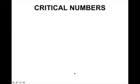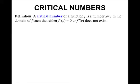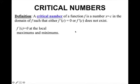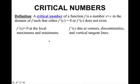This leads into what we call critical numbers. A critical number of a function f is a number x equals c in the domain of f such that either the derivative equals 0 or the derivative does not exist. When the derivative does not exist, that means like a corner, or a jump, or an asymptote, or something like that. So f prime of c equals 0 at local maxes and minimums, and when f prime of c does not exist, that's at corners, discontinuities, and vertical tangent lines.